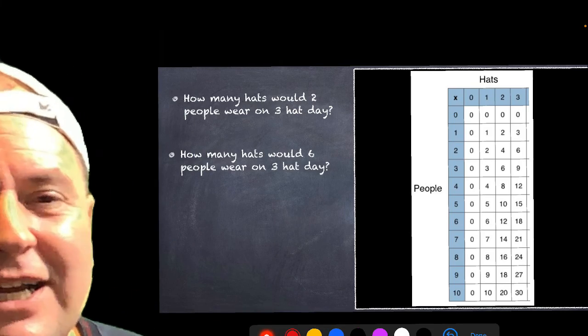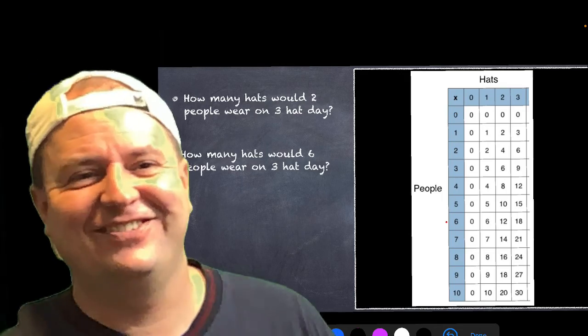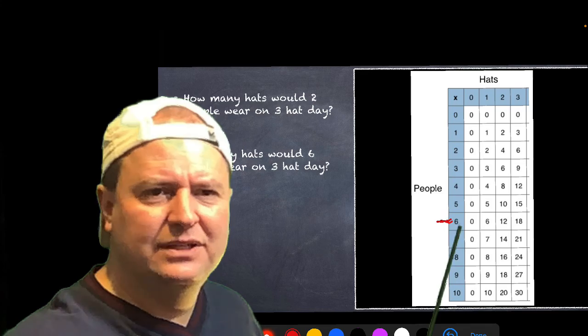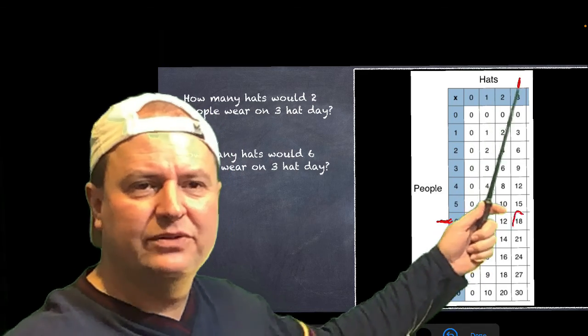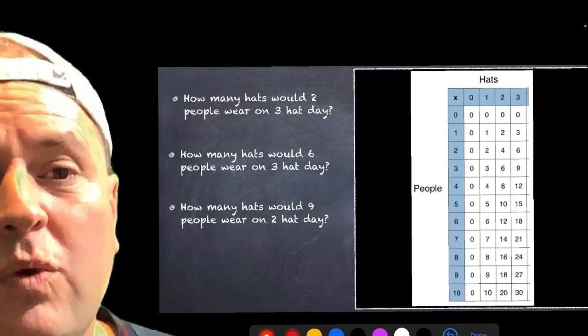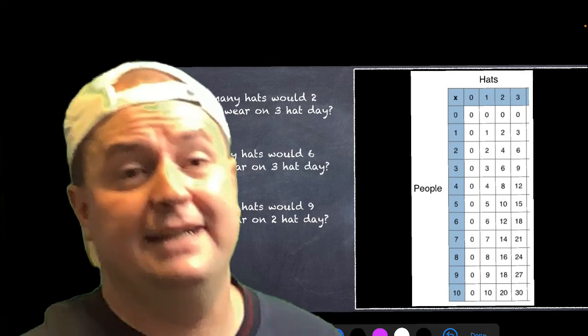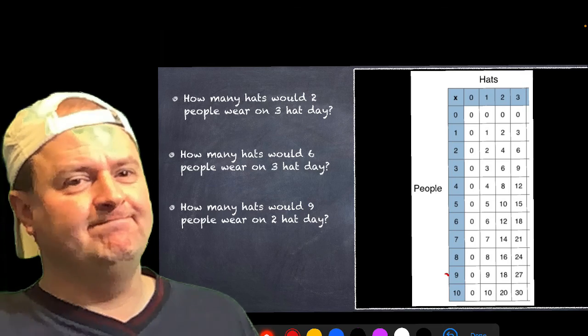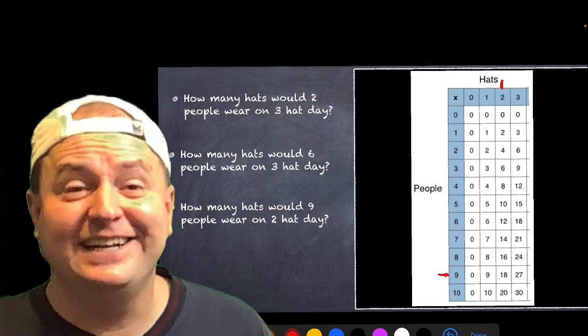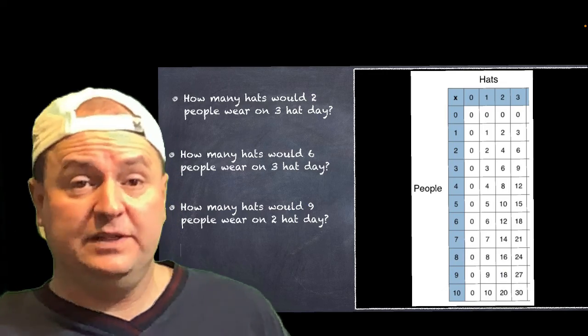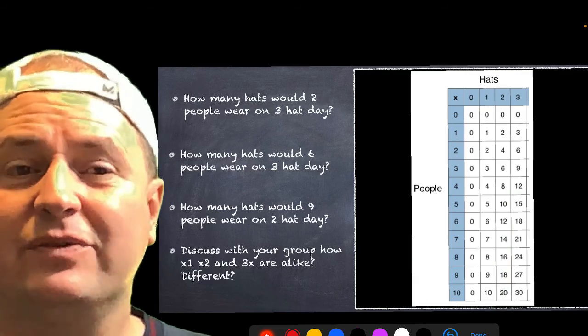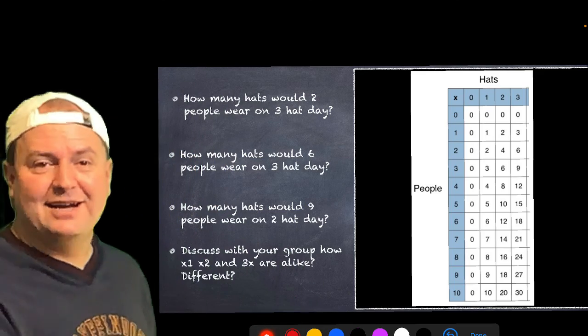All right. Next one. How many hats would six people need on three hat day? Where would I find this on the times table chart? Yes. I would go down to number six, right? And then I would look to see where zero, one, two, three was. What's right there? Exactly. Eighteen. Okay. Try this one. See if you can find where it would be on this chart. How many hats would nine people need on two hat day? So, I've showed you how to do that, right? So, nine is right there. Up here's the number of hats. Two is right there. So, what corresponds is the number 18. Pretty easy, right? I love times tables charts because they're pretty self-explanatory once you've done a few. So, now discuss with your group what's, how one times, two times, and three times are alike and how they're different. Your teacher's going to press pause and we'll come right back to this question.